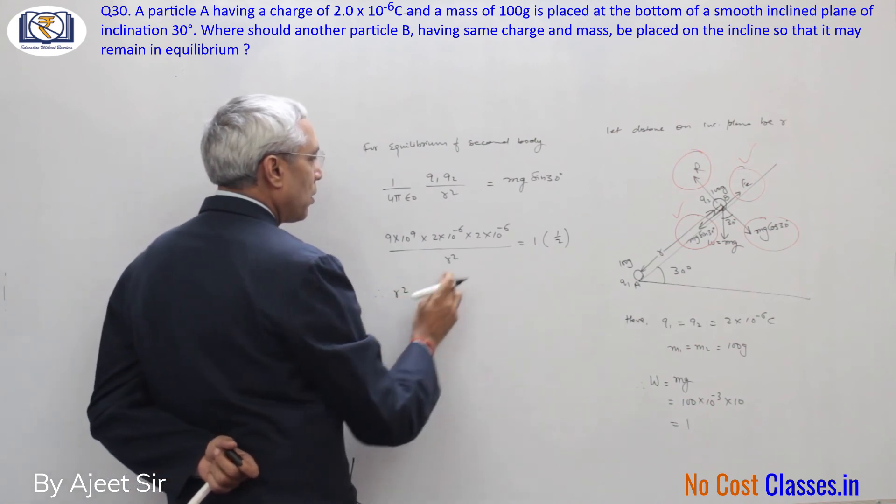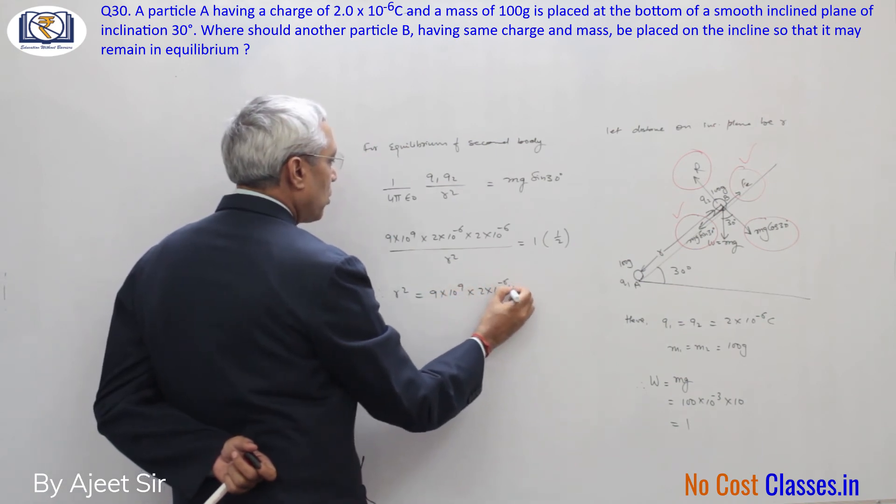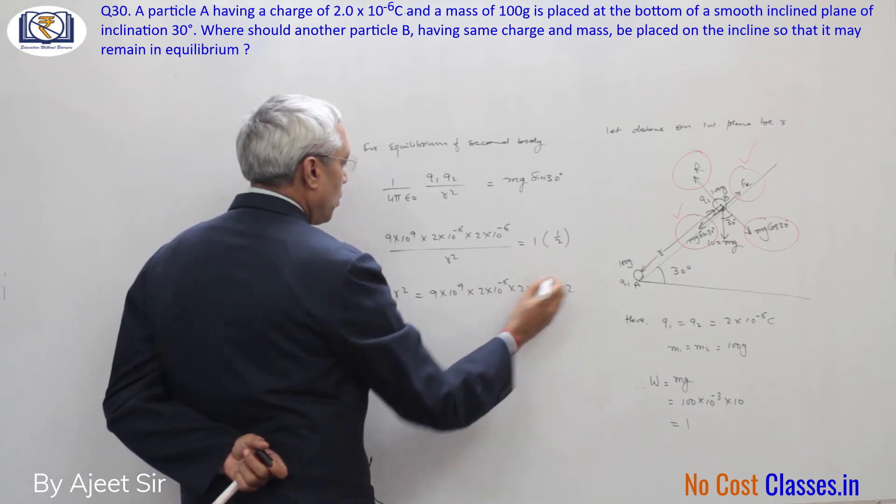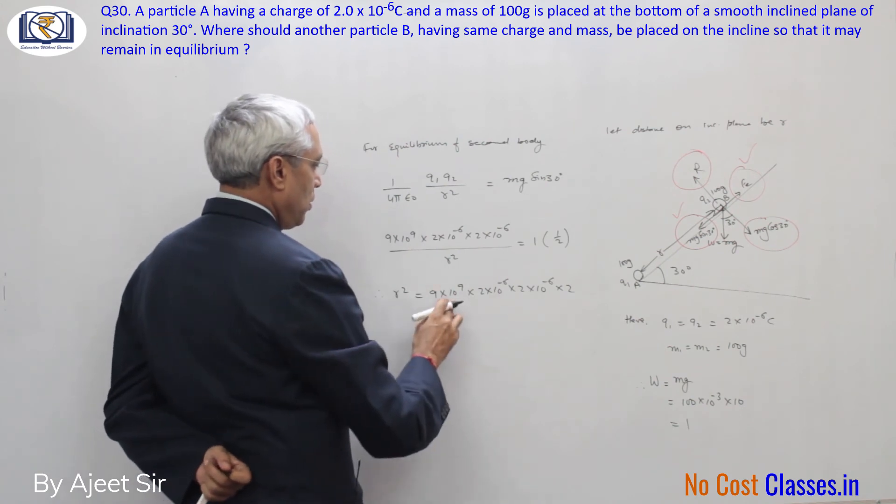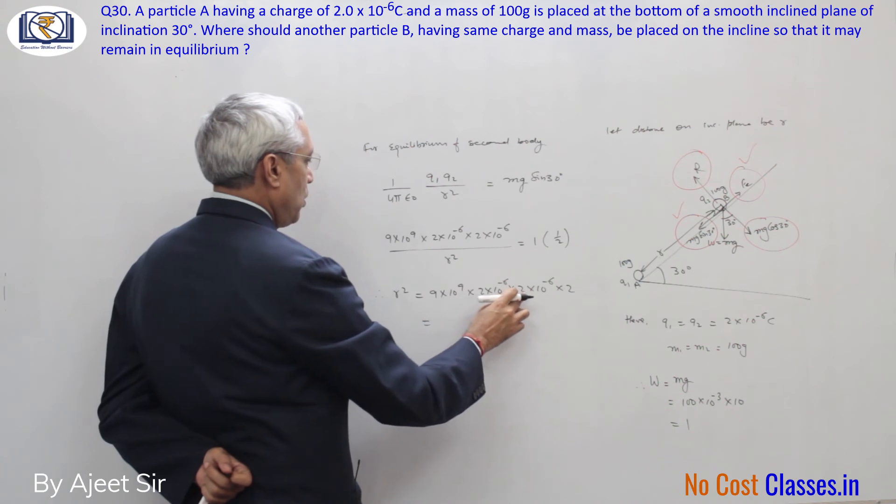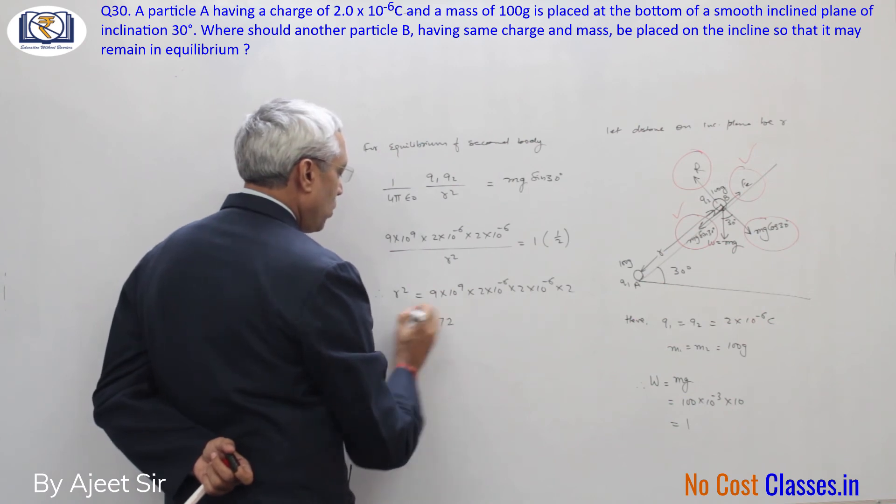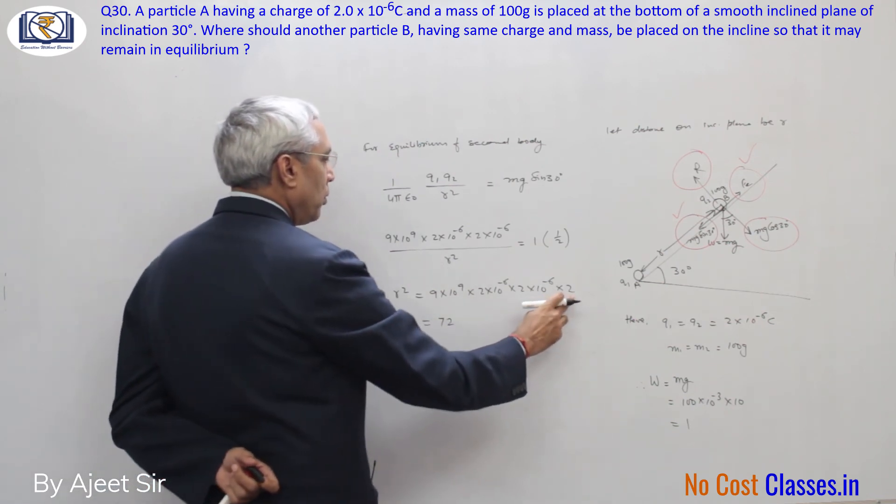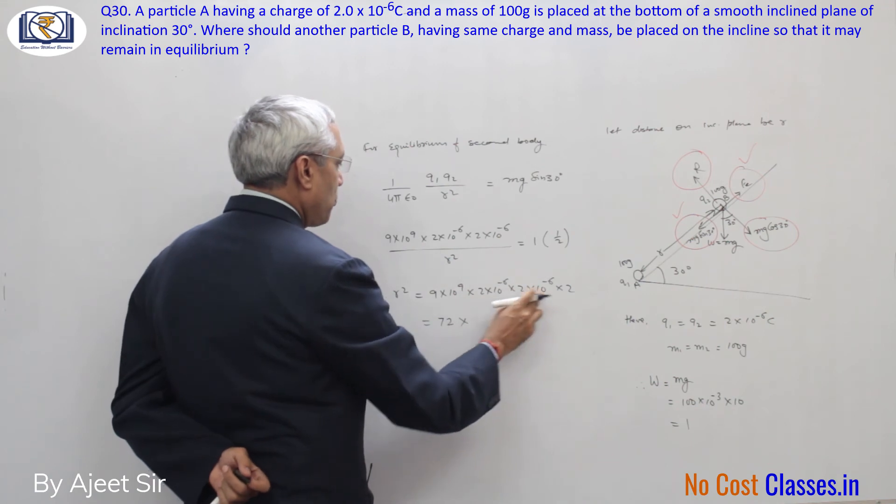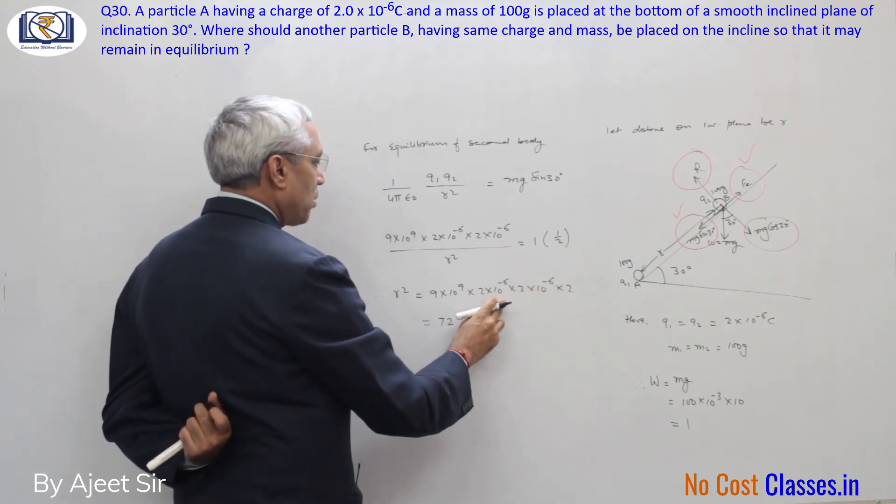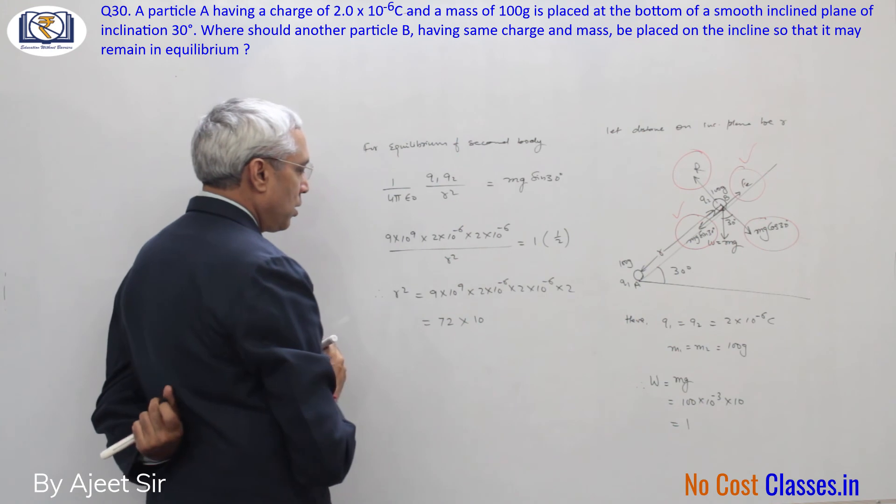Therefore, r square equals 9 into 10 to power 9 into 10 to power minus 6 into 10 to power minus 6. This is 10 to power minus 3.